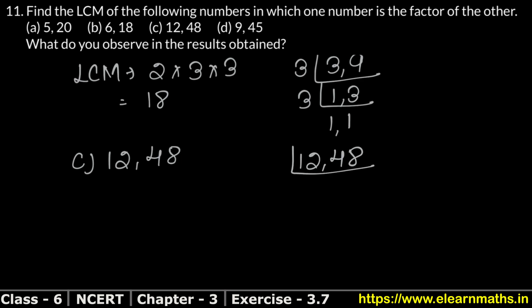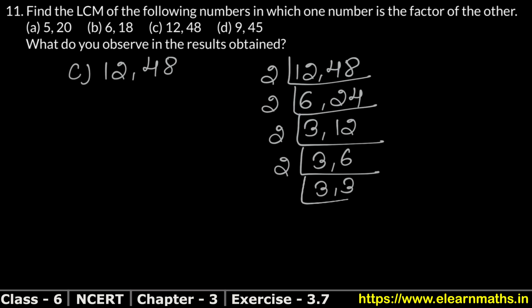So let's do the LCM. Now both numbers will go by 2. 2 sixes are 12, 2 twos are 4, and 2 fours are 8. Now again by 2 both numbers will go. 2 threes are 6, 2 twelves are 24. Now again 2 divides, 3 as it is, 2 sixes are 12. Now again 2 divides, 3 as it is, 2 threes are 6. See, now both numbers divide by 3. 3 ones are 3.